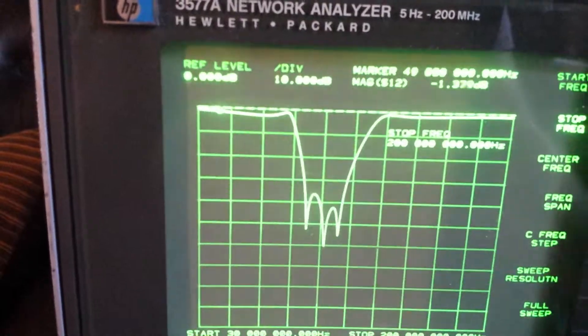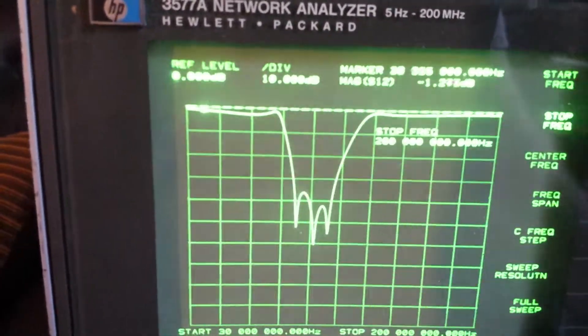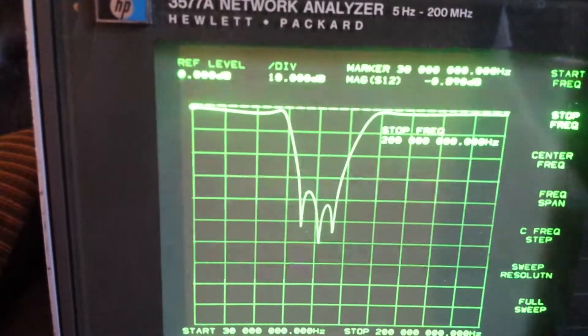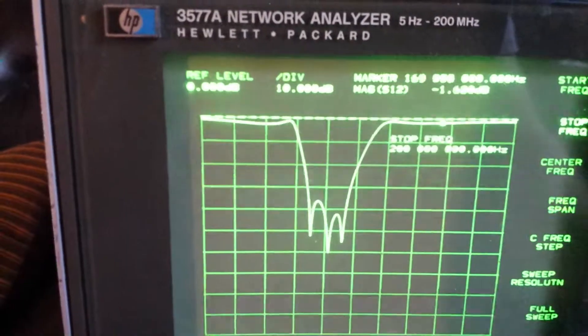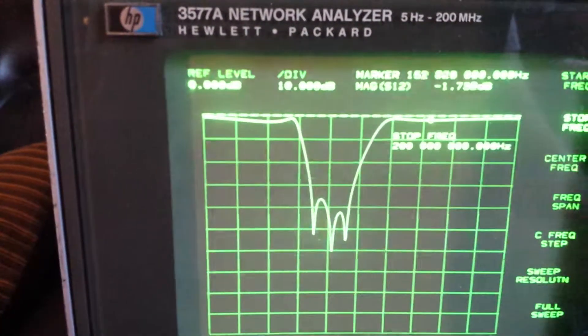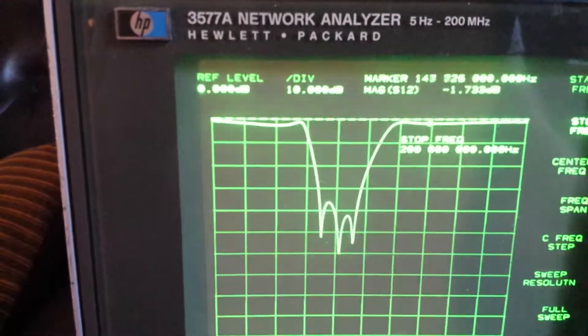You get almost 2.5 dB right here, around 60 MHz. But it's about 1 dB, a little over 1 dB up here. Around 150 MHz, almost 2 dB. That would be the 2 meter band.